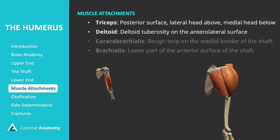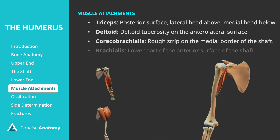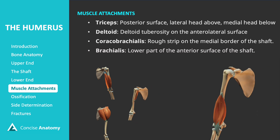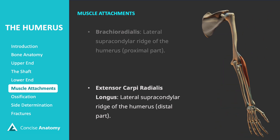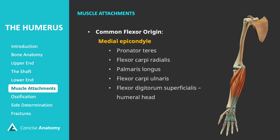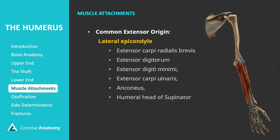The deltoid attaches to the deltoid tuberosity on the anterolateral surface, while the coracobrachialis attaches to a rough strip on the medial border of the shaft. The brachialis attaches to the lower part of the anterior surface of the humeral shaft. The brachioradialis attaches to the proximal part of the lateral supracondylar ridge, while the extensor carpi radialis longus attaches to the distal part of the lateral supracondylar ridge. The common flexor origin on the medial epicondyle serves as the attachment site for the flexor muscles of the anterior forearm, while the common extensor origin on the lateral epicondyle serves as the attachment site for the extensor muscles of the posterior forearm.